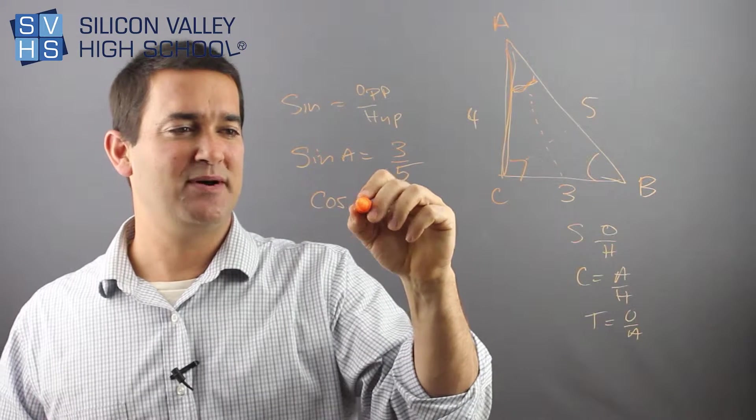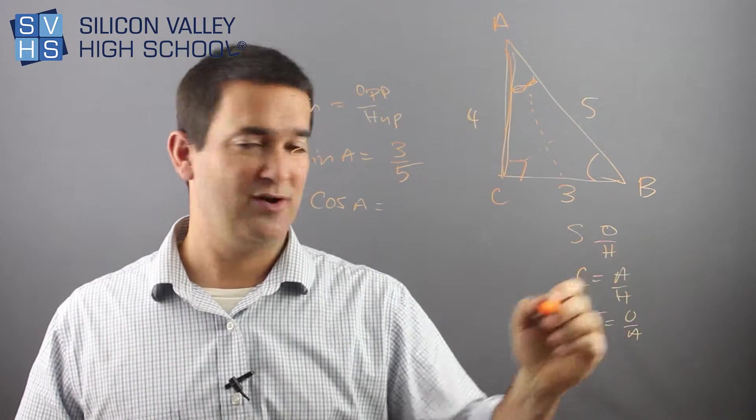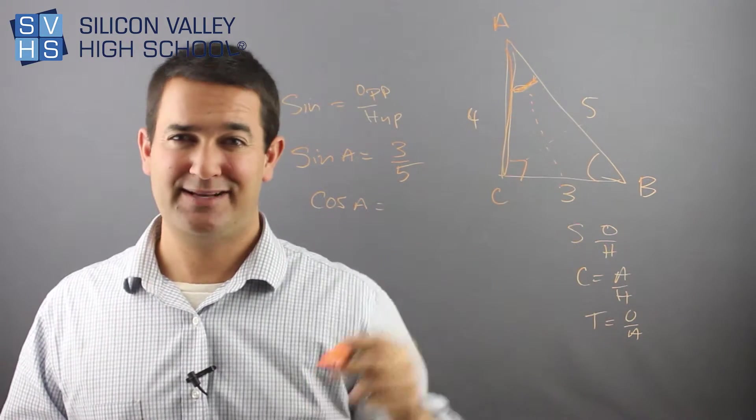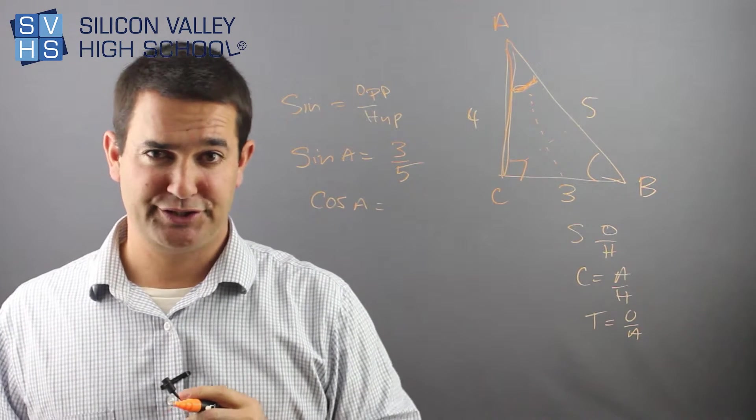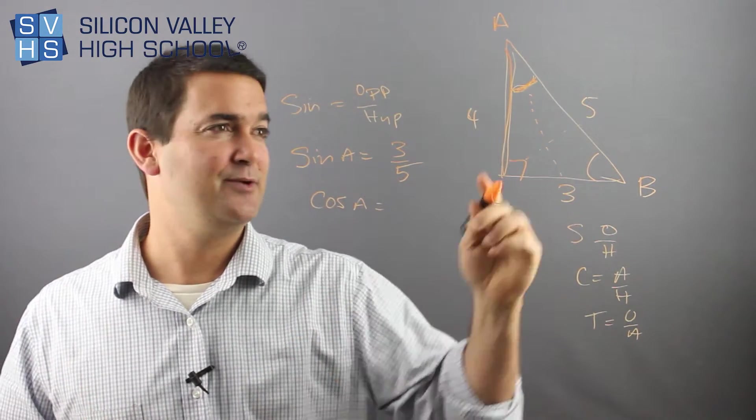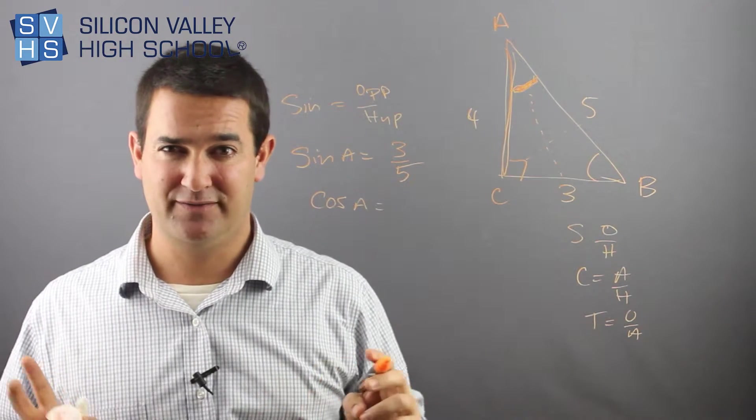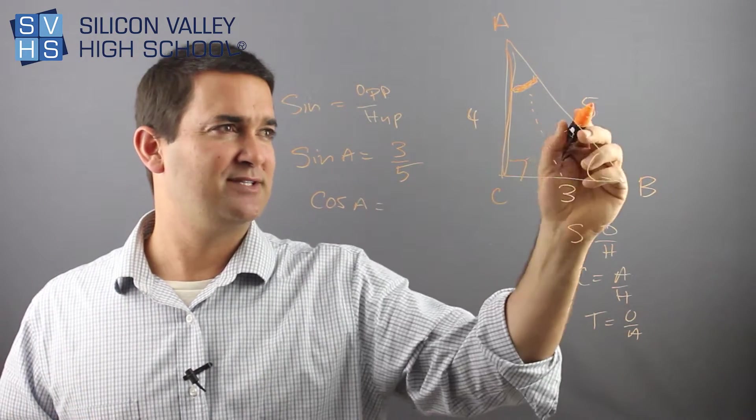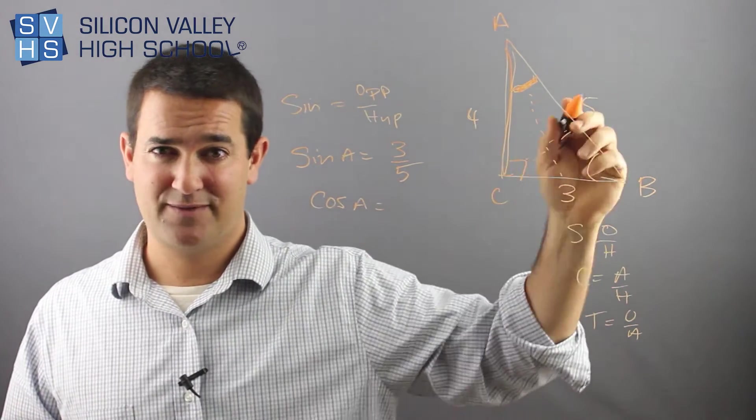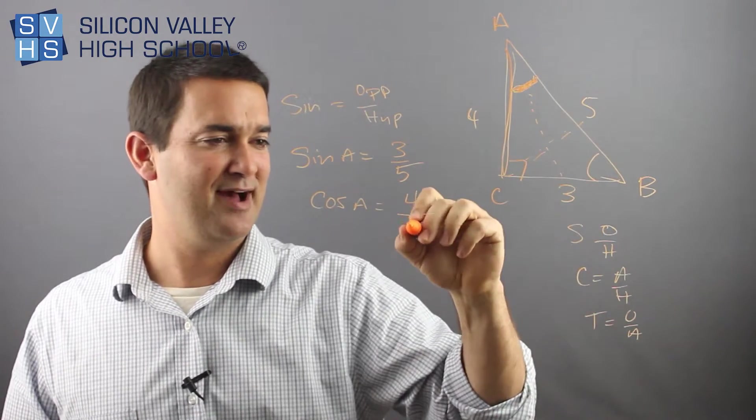What might be a little more confusing is, what about cosine of A? Cosine, we remember, is adjacent over hypotenuse. So from A, who's adjacent? Well, adjacent means like next door to, like the church is adjacent to the elementary school, right? Adjacent means next door to. So who's adjacent to A? It looks like 4 and 5 are, so that's super confusing. Is it 4 or is it 5? Well, 5 is already spoken for. The 5 is clearly the hypotenuse because it's across from the 90. So adjacent must be this guy. So this is 4. Again, over hypotenuse, 5. Done.